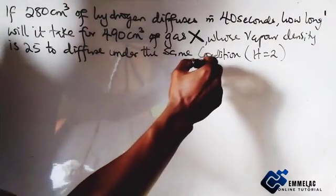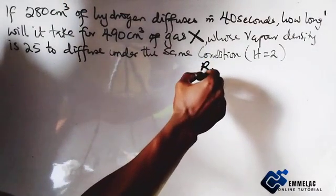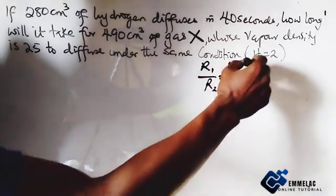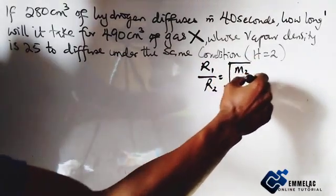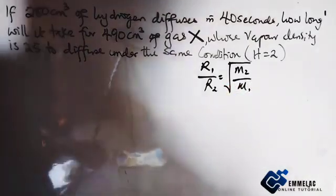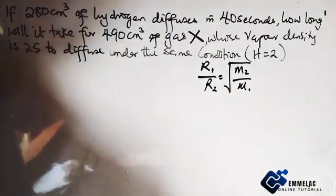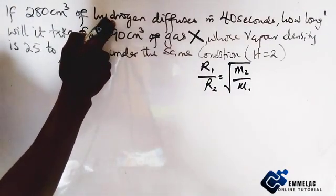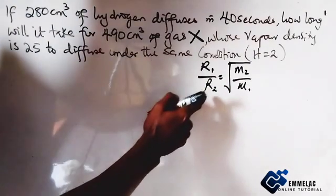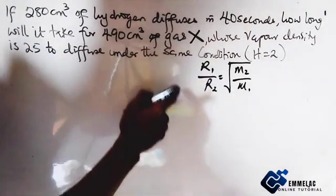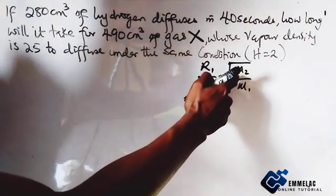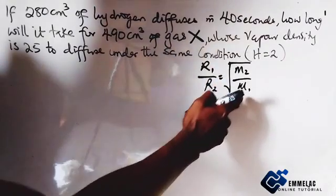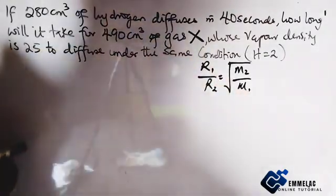of diffusion that R1 over R2 equals to square root of M2 over M1. Now here R1 represents the rate of diffusion of hydrogen, R2 the rate of diffusion of X, M2 the mass of X, and M1 the mass of hydrogen.